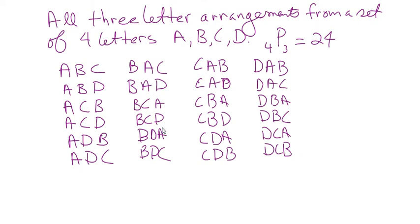Now, what if we didn't care about the order? This has order built in — if we're drawing three out of four letters, we might care about order, like first prize, second prize, third prize. So ABC means A wins first, B wins second, C wins third.